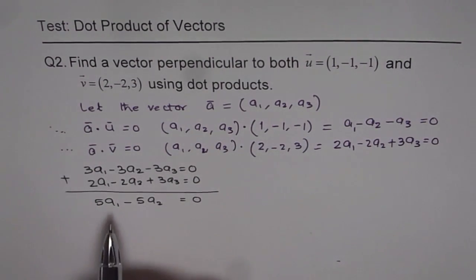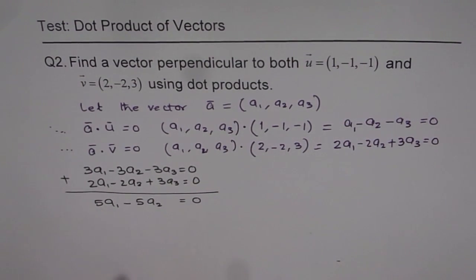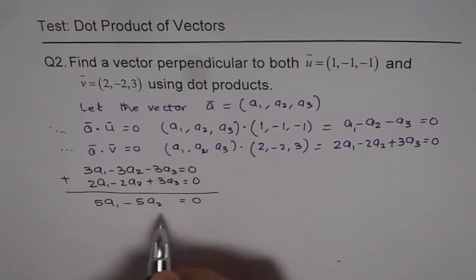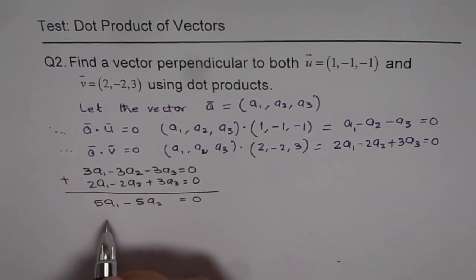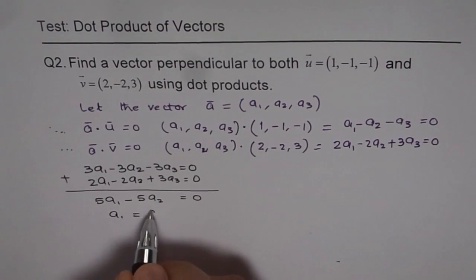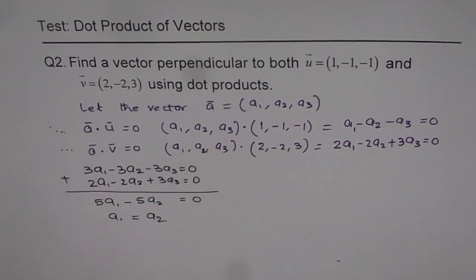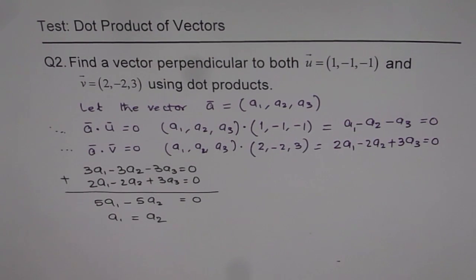Now you get a1 in terms of a2, which is a1 equals a2. If a1 equals a2, only then this statement is true. So you get your solution: a1 equals a2. You really don't get any numbers here — you just get a1 equals a2.